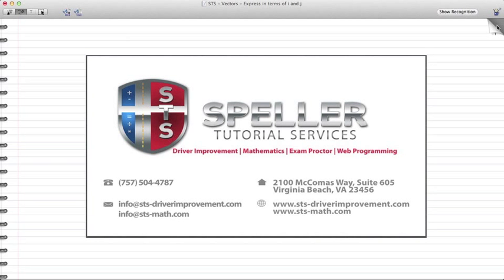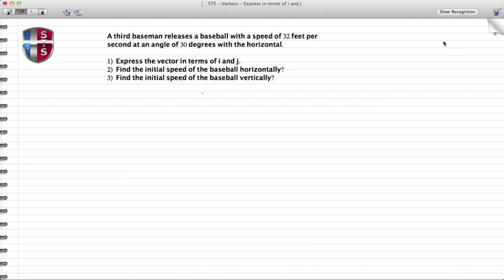In this word problem, a third baseman releases a baseball with a speed of 32 feet per second at an angle of 30 degrees with the horizontal. We need to find three things: first, express the vector in terms of i and j; second, find the initial speed horizontally; and three, find the initial speed vertically.